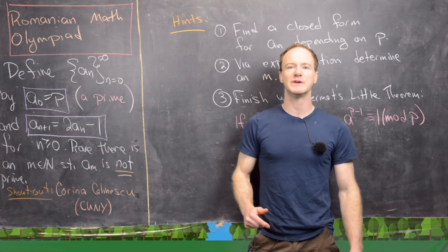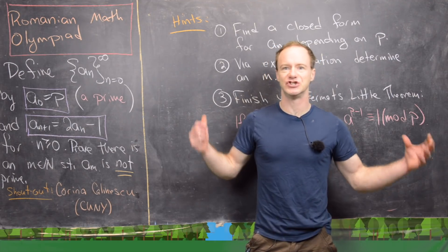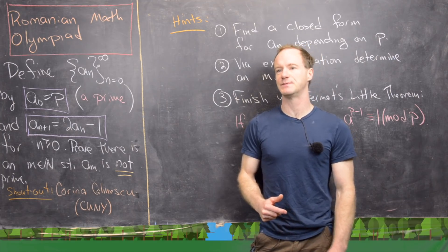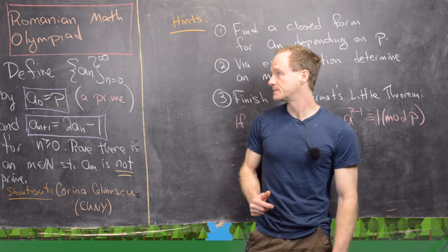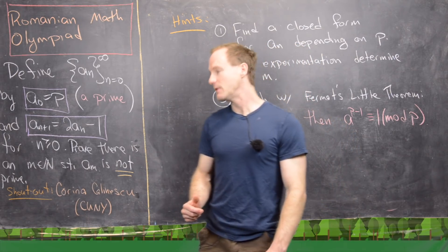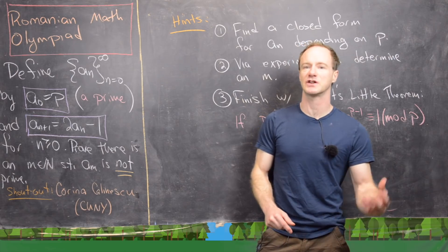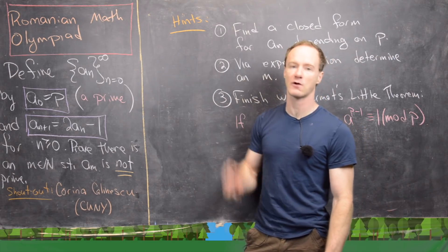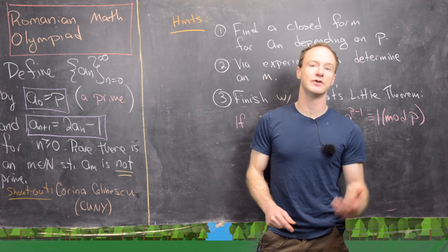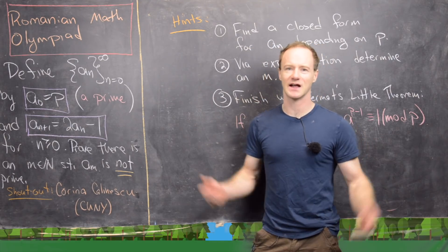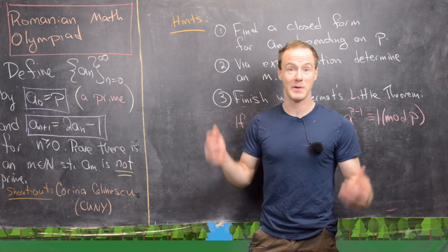Obviously this should be true, because if it weren't, then we'd have some nice generating formula for prime numbers, but it's well known that there's no generating formula for prime numbers. And before we talk about the hints, I want to give a shout out to one of my research collaborators who's originally from Romania, Karina Kalinescu, who works at the City University of New York. She's not on YouTube or anything, but I thought I'd just mention the Romanian connection.